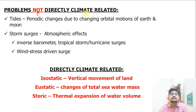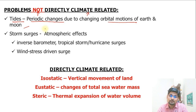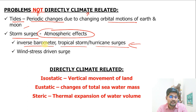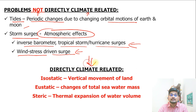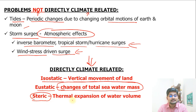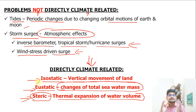Problems not directly climate-related include tides — periodic changes due to changing orbital motions of Earth and Moon — and storm surges like atmospheric effects including inverse barometer, tropical storm, and hurricane surges, as well as wind stress driven surges. Directly climate-related impacts include isostatic level changes (vertical movement of land), eustatic changes (changes in total seawater mass), and steric changes (thermal expansion of water volume). These three — isostatic, eustatic, and steric changes — are directly related to the climate change we observe in the oceans.